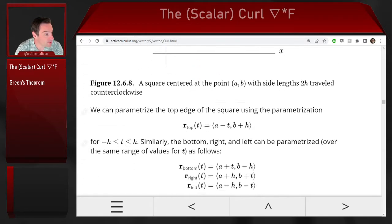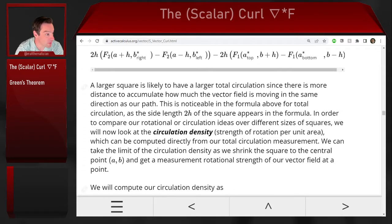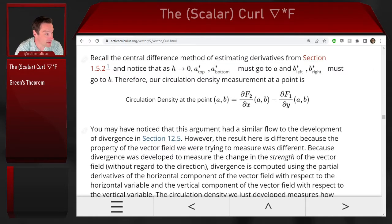And so our authors go through the trouble of doing the calculations and the limits and all that stuff to show where this differential quantity comes from. But ultimately what they come up with is this expression for the circulation density of a vector field f1 comma f2. It's the x partial derivative of f2 minus the y partial derivative of f1.